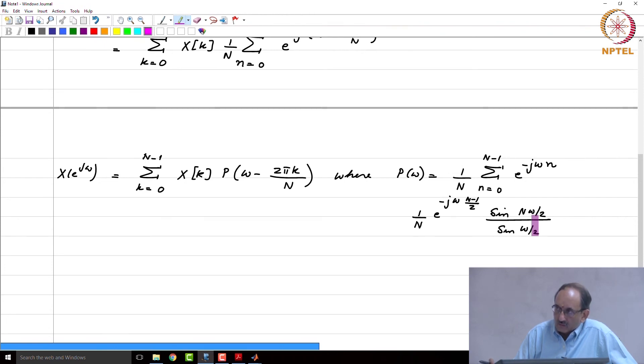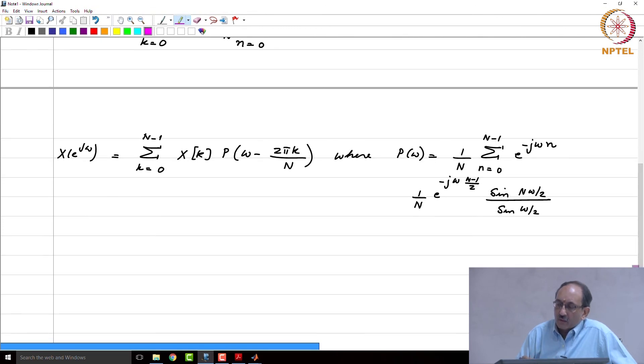Okay, very good. Now, can you? Very good. So, this does not involve an infinite number of terms, it only involves finite number of terms. So, this is recovering the DTFT from the DFT. So the interpolation function is the Dirichlet kernel and only finite number of terms are used.